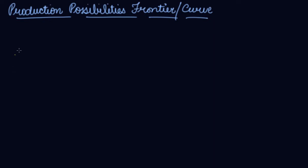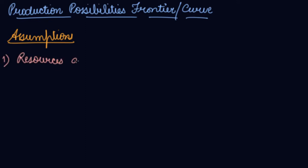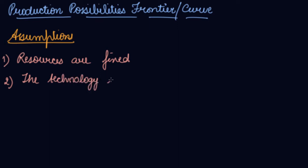The assumptions of the production possibilities frontier are: Assumption 1 - resources are fixed. Assumption 2 - technology is given and remains unchanged.